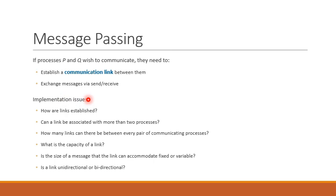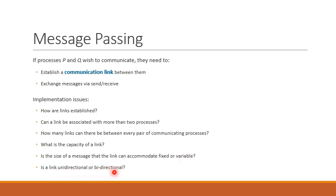There are different implementation issues with respect to the communication link. For example: How are links established? Can a link be associated with more than two processes — can three, four, or five processes share a link? How many links can exist between every pair of communicating processes? What is the capacity or bandwidth of a link? Is the size of a message that the link can accommodate fixed or variable? Is the link unidirectional or bidirectional — can only P send messages to Q, or can Q also send messages to P?